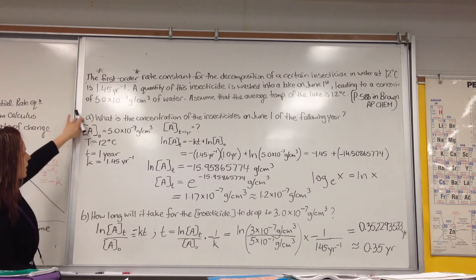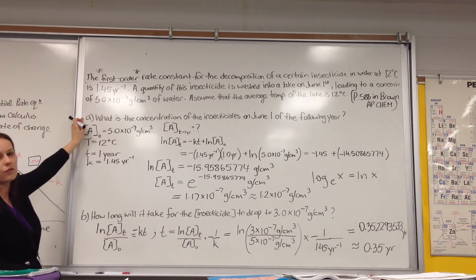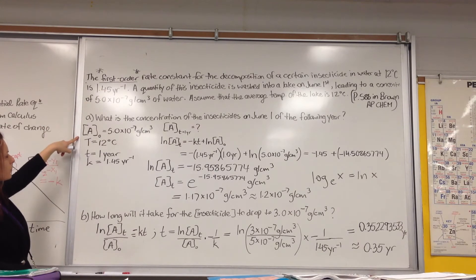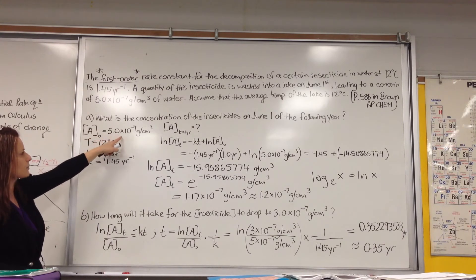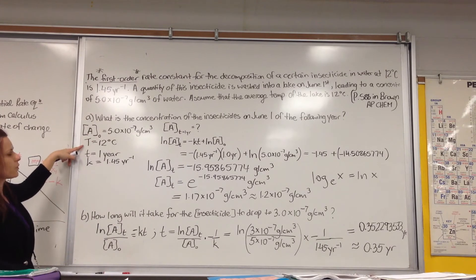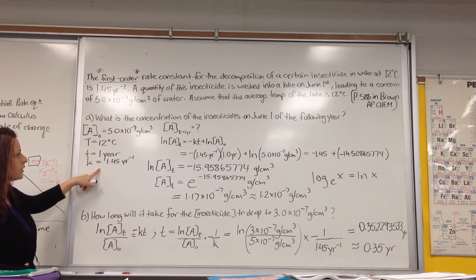So the question is asking us, what is the concentration of the insecticide on June 1st of the following year? So we write out in the question what's given to us, so we know that A0, the initial concentration of the insecticide, is 5 times 10 to the negative 7 grams per centimeter cubed. Temperature was 12 degrees Celsius, time was one year, and our rate constant K is 1.45 per year.